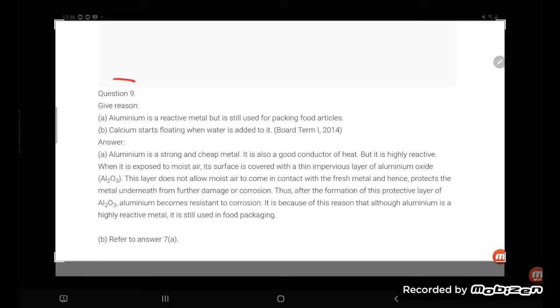So student, let's see question number 9. Give reason: Aluminium is a reactive metal, but is still used for packaging food articles.